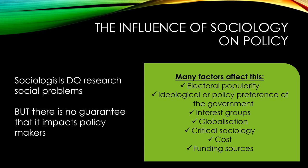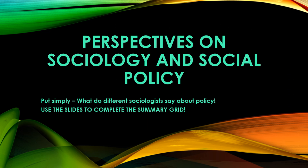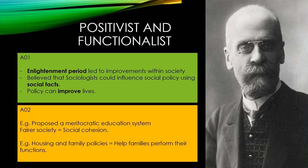Now let's look at what different sociologists think about social policies, starting with positivist and functionalist perspectives. Early functionalists such as Durkheim conducted research during the Enlightenment — a period of rational thinking, scientific discovery and technological advancement. They believed sociological research based on social facts could influence society for the better. For example, Durkheim proposed a meritocratic education system and abolishing inherited wealth to make society fairer and promote social cohesion.